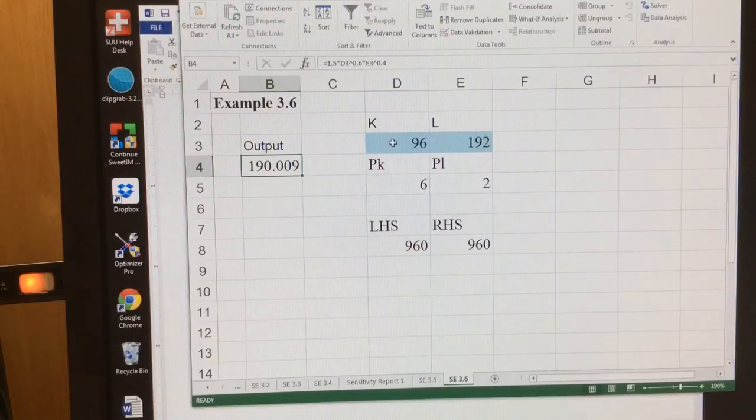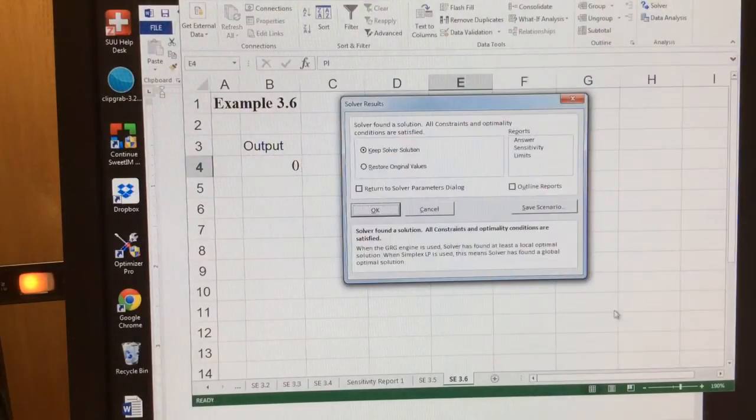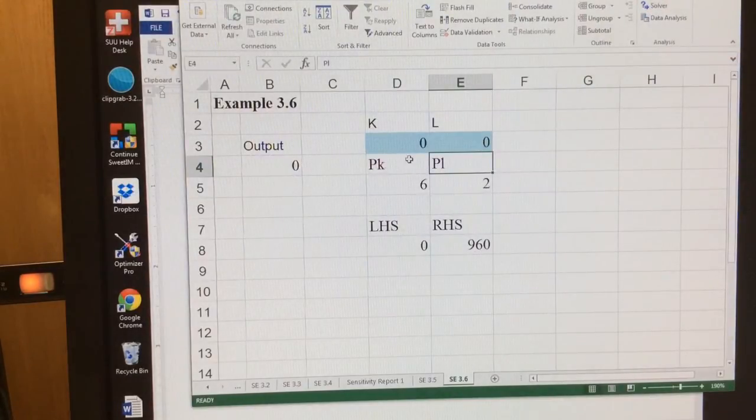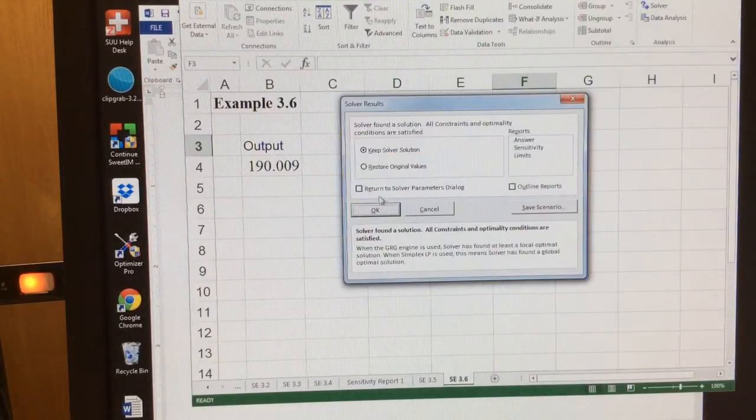Now a couple things to note is if you started off with 0 and 0, for some reason many times solver does not quite understand this and will do 0, 0. So the way to solve that is just put some numbers in here quickly and solve it, and you'll get the right answer.